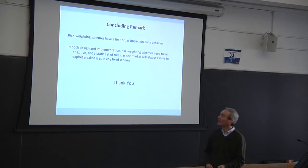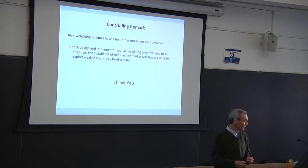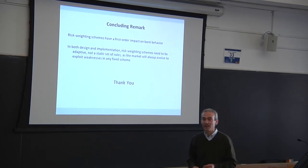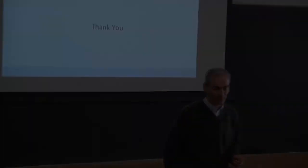So, just to summarize, risk weighting schemes have a first-order impact on bank behavior. And in both the design and implementation, risk weighting schemes need to be adaptive, not a static set of rules that you revisit once every 15 years or so, as the market will always evolve to exploit weaknesses in any fixed scheme. Thank you.